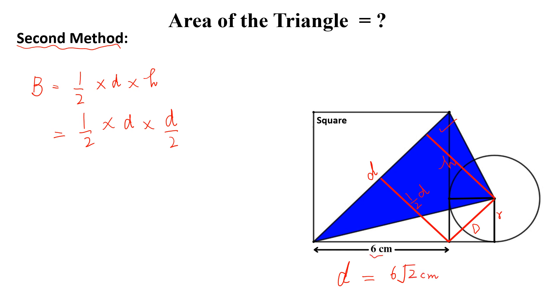The side of this square is 6 centimeter. Now we will put values here, so half multiplied by 6 square root of 2 multiplied by half of 6 square root of 2. Simplify this, we will get 18 centimeter square and this is the required answer.